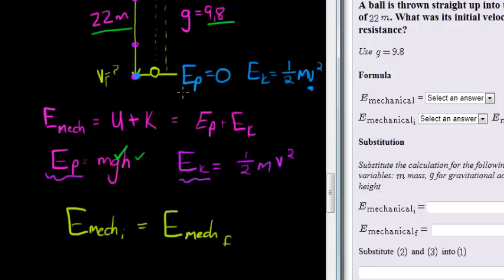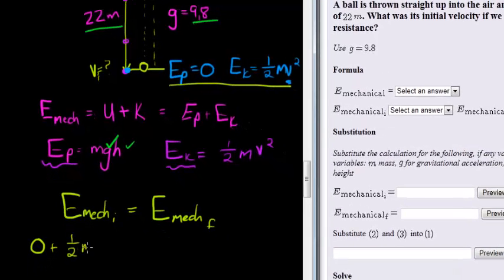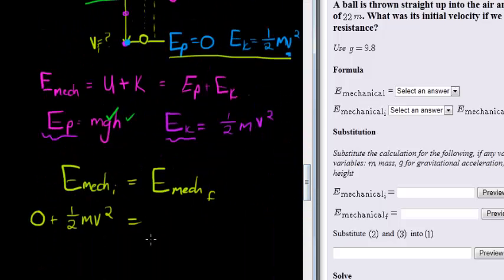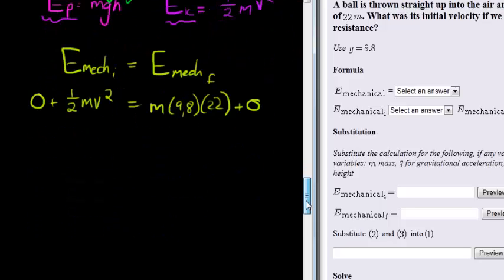And we know initially, when it was thrown up into the air, we had zero potential energy and half mass times velocity squared. At final mechanical energy, that's there at the top, we saw, well, potential energy is this time mass times 9.8 times 22, plus our kinetic energy at that point was equal to zero.